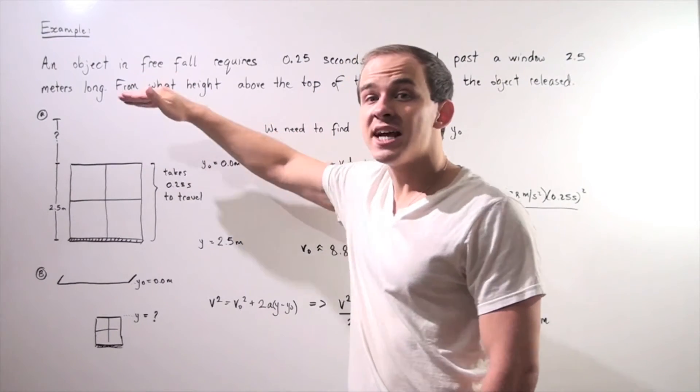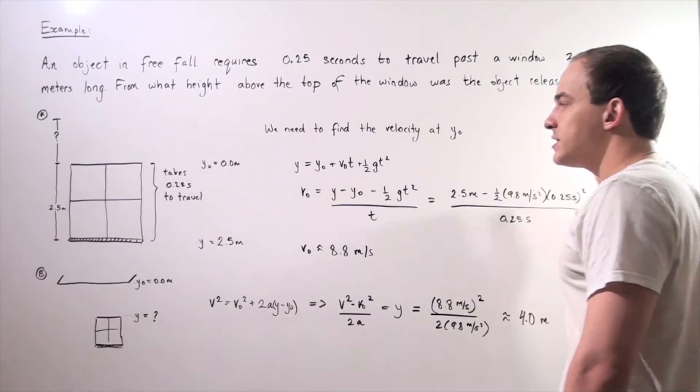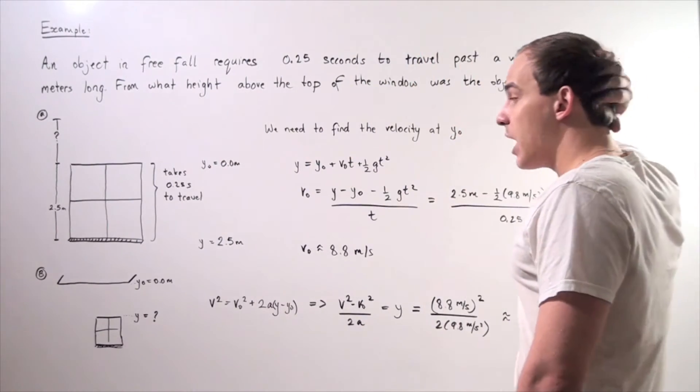So our object's velocity at this point at the top of the window was 8.8 meters per second. So this is the first part of our problem.